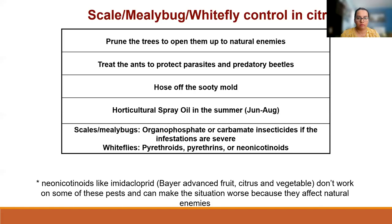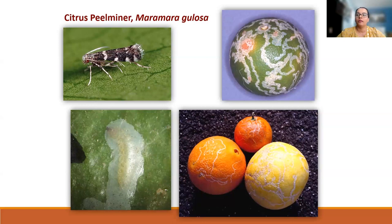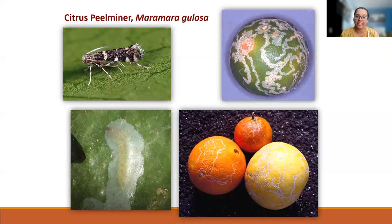Citrus peel miner is a fly that lays eggs on the fruit surface; when the larvae hatch, they mine the peel and create artistic-looking tunnels. The damage can look unsightly, but this is also a surface pest — it does not cause any damage to the interior of the fruit, so ignore it if you can.